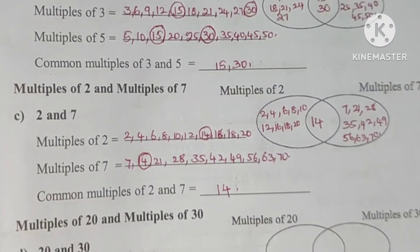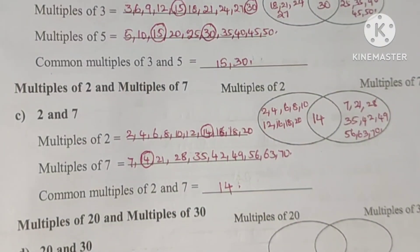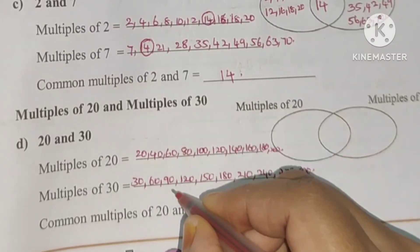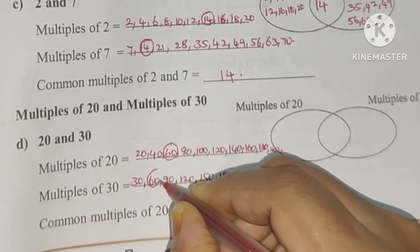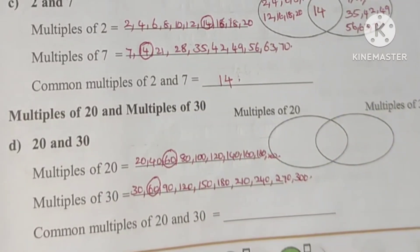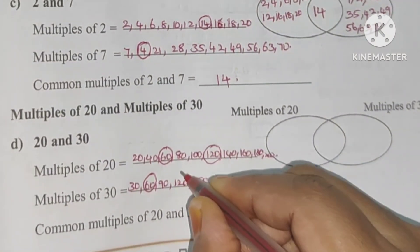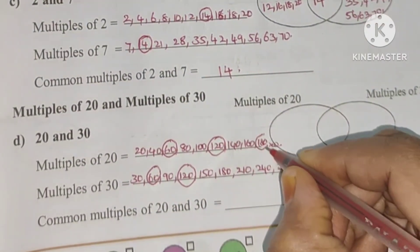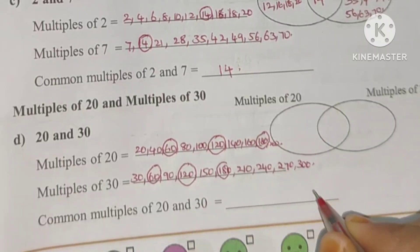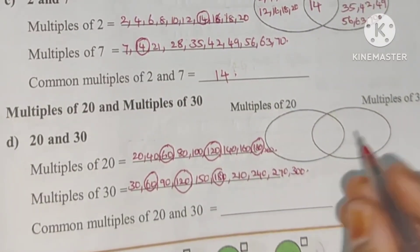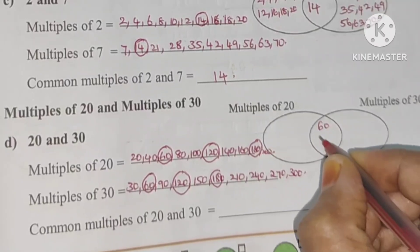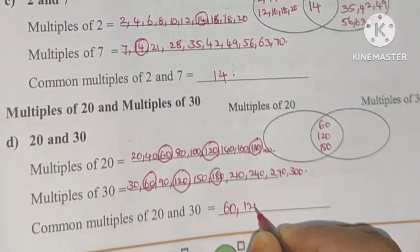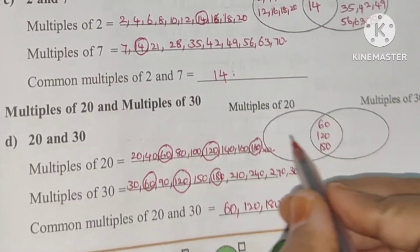Common multiple is 14. Now 20 tables and 30 tables. Common is the least common multiple. First 60, next 120, next is 180. Common multiples are 60, 120, and 180.